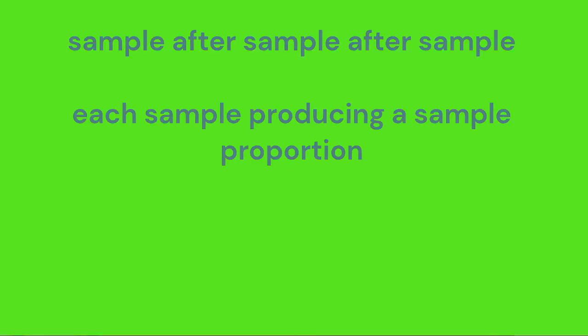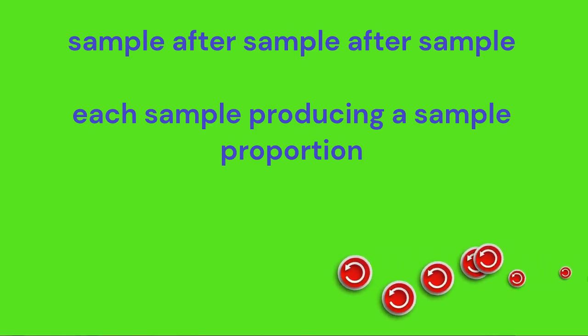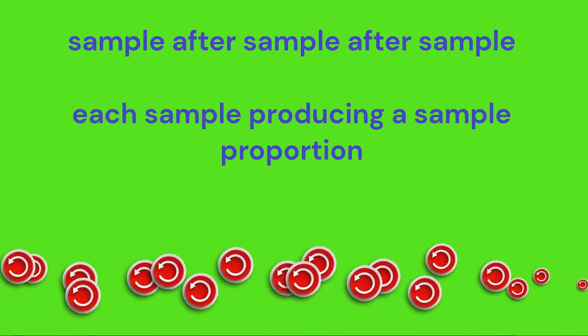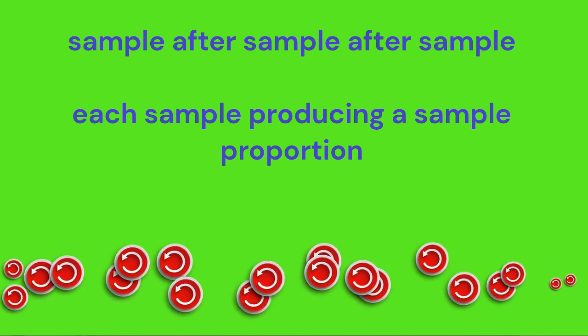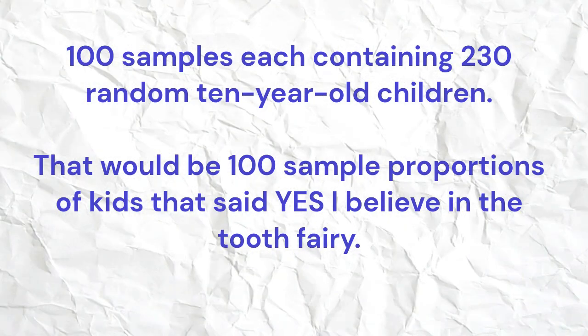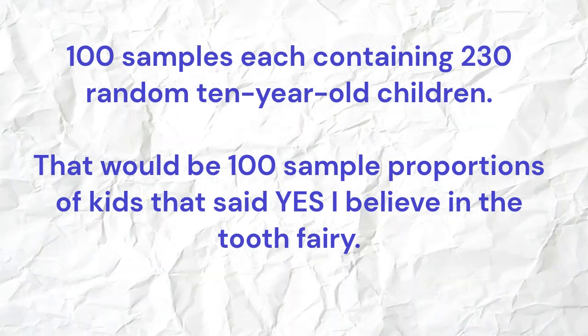Selecting 230 kids is well under 10% of the millions of 10-year-old kids living in the United States. Now if we started to repeatedly sample — take out 230 ten-year-olds, ask if they believe in the tooth fairy, get a sample proportion, then rinse and repeat — there are tons of different possible samples of 230 from that population. So let's just look at 100 samples, each containing 230 students.